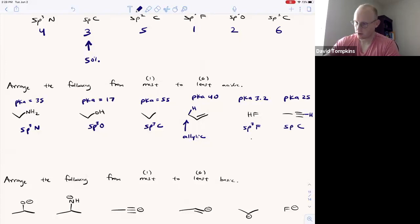So the most acidic is going to be the most electronegative, followed by the next most electronegative, the oxygen, and then the sp carbon, and then the sp3 nitrogen, finally the allylic proton, and then simply propane is the least acidic.